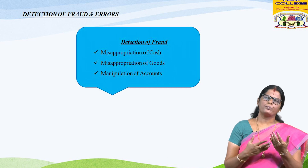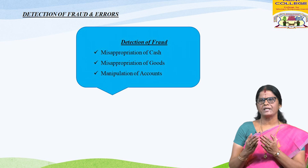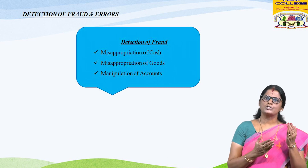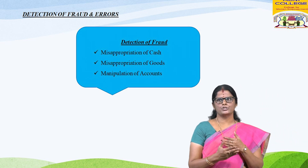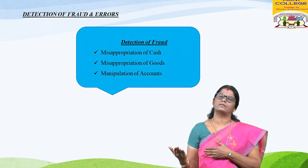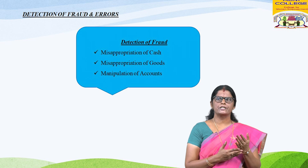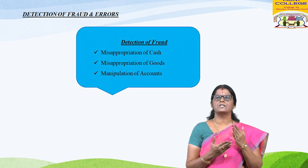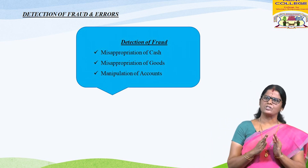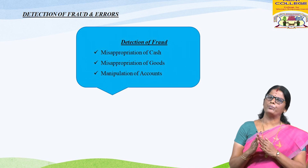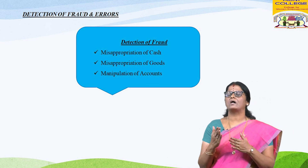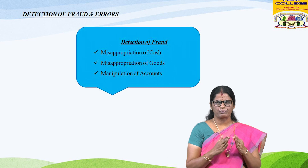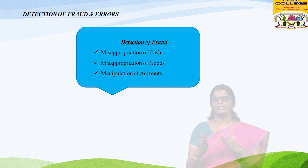Misappropriation of goods can be done in the following ways: goods may be stolen by employees, or with the help of employees, by issuing false credit notes to customers on account of goods returned. Detection of misappropriation of goods is more difficult than detecting misappropriation of money, especially where management is not cautious and a sound system of bookkeeping, internal control, and adequate system of securities are not available. Physical verification of goods, reconciliation of physical stock with books, and careful checking of sales and purchases are essential.